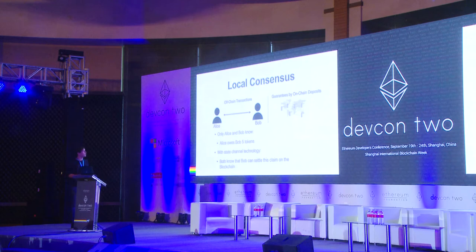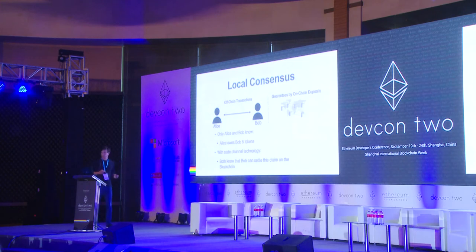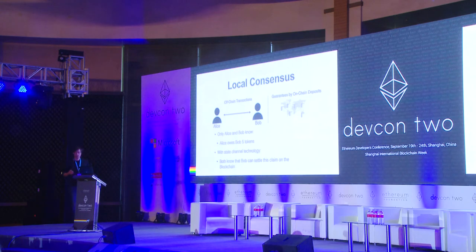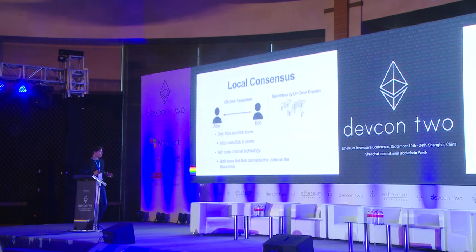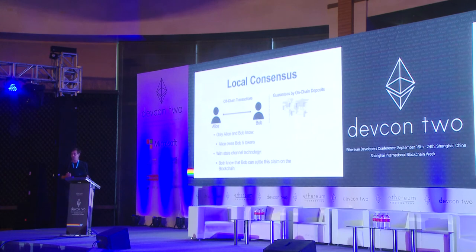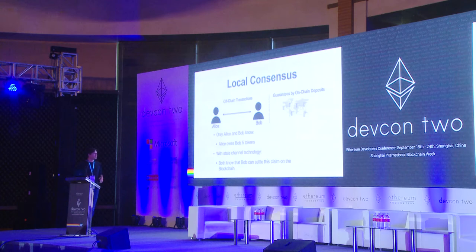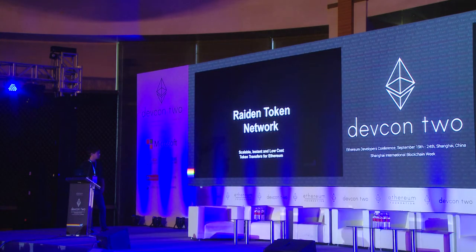So if you switch to a different view on consensus — if it would only be between Alice and Bob — Alice would send Bob a check saying 'I owe you five tokens.' And if you add some state channel technology which allows Bob to be secure about the fact that he's able to claim those five tokens on the blockchain, then you have a pattern which you can use to improve the situation. That's what we base the Raiden token network on.